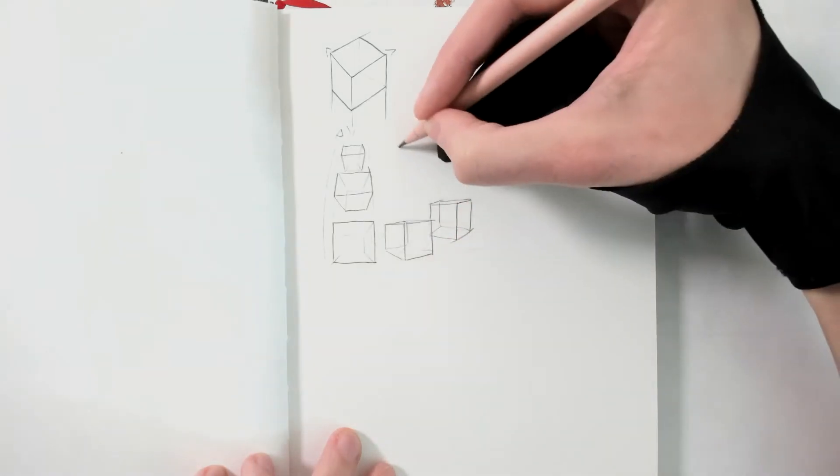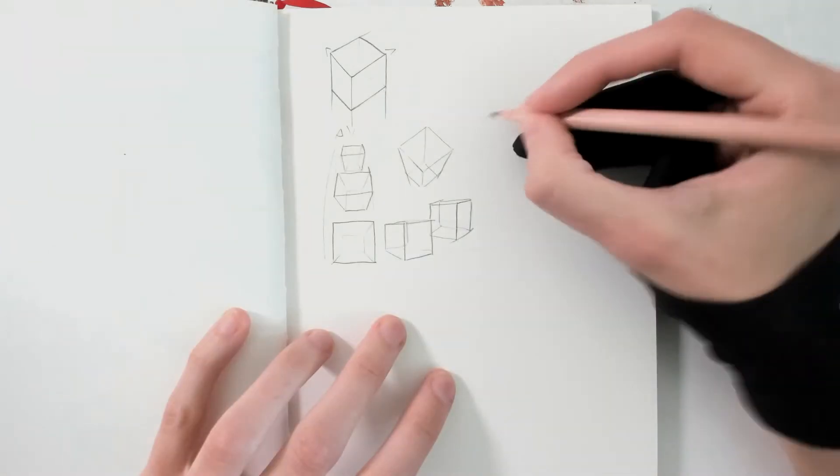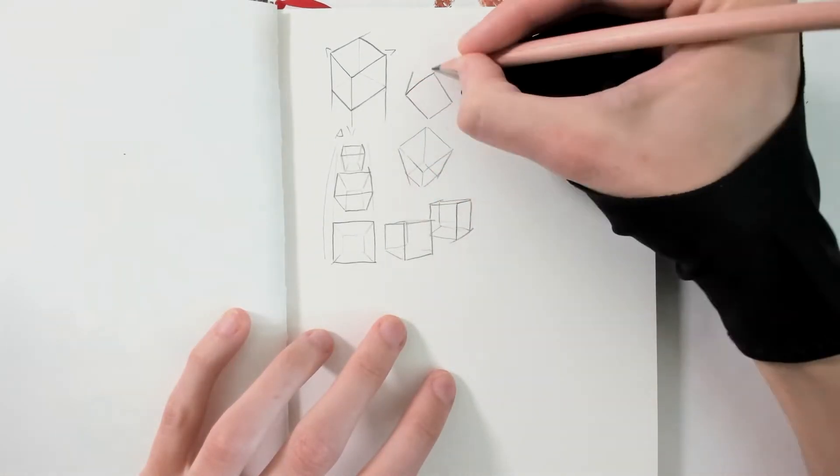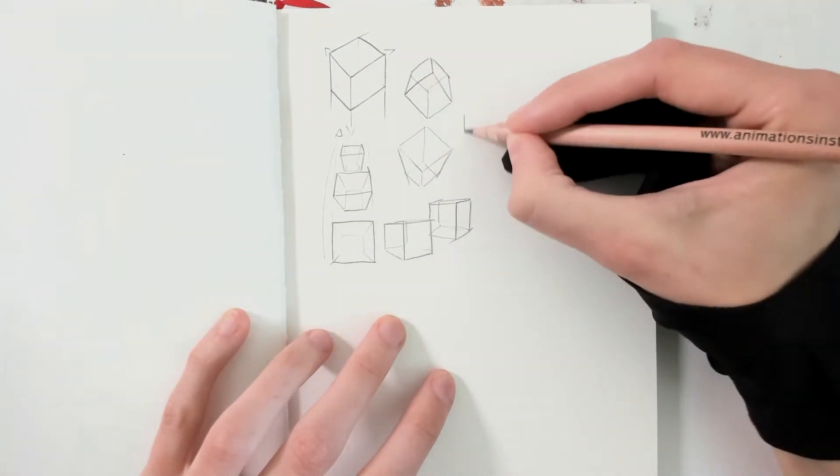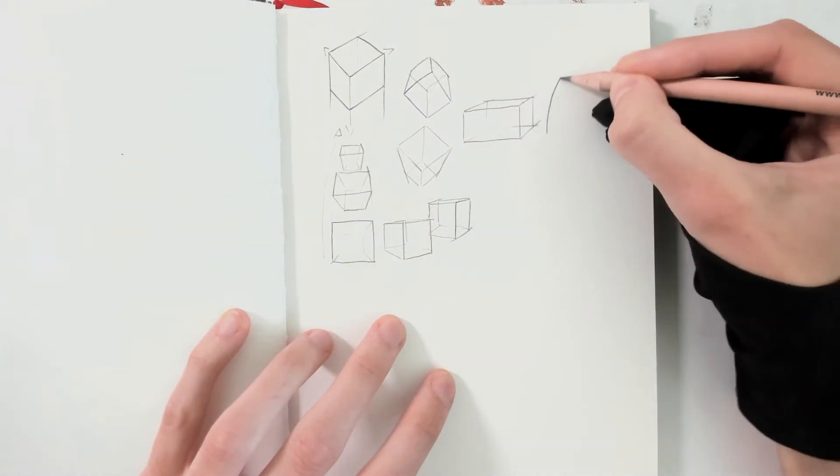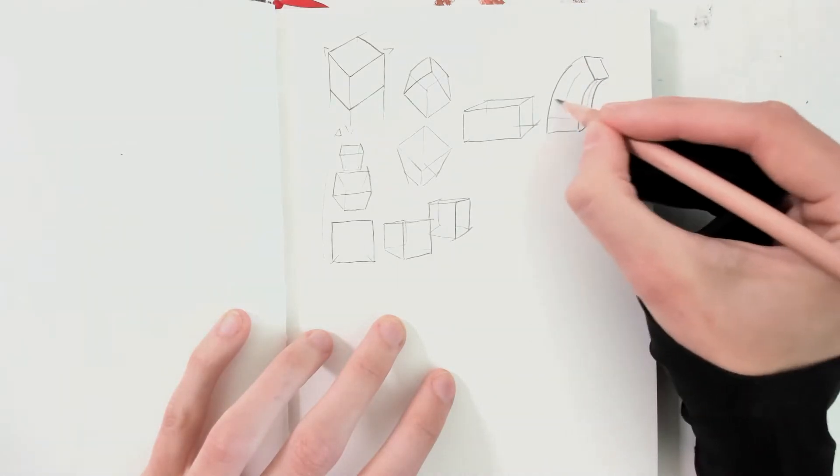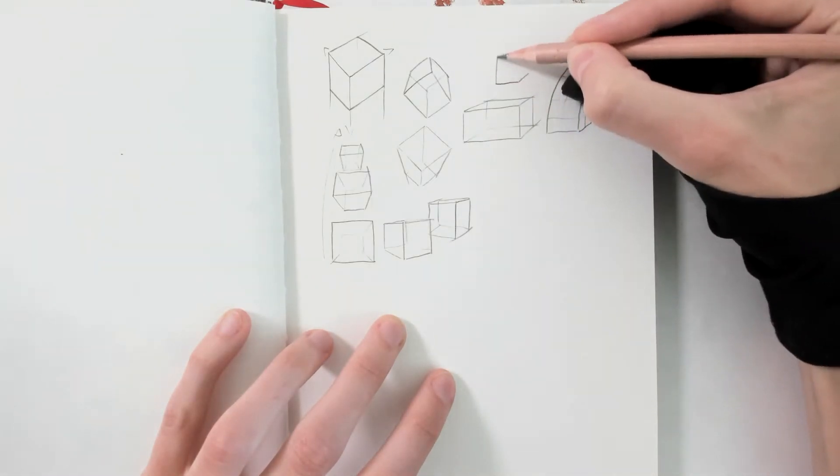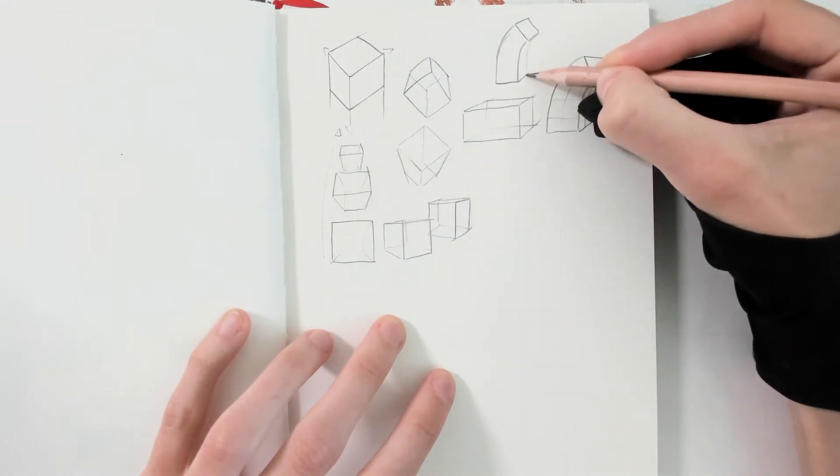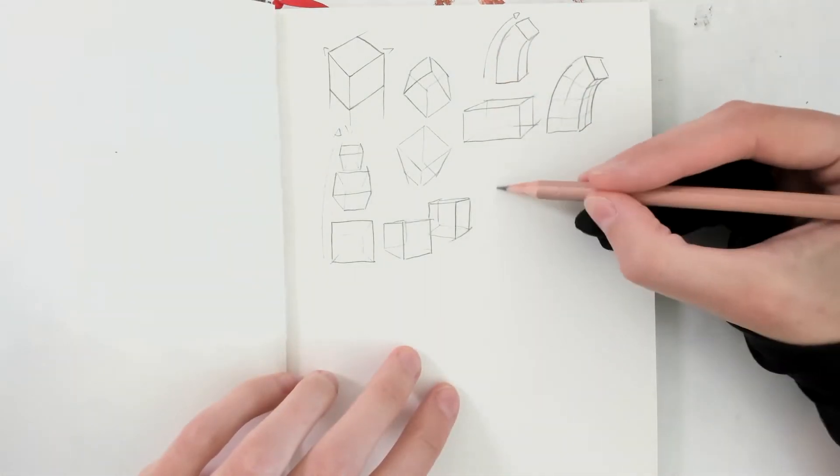So basically the idea of this exercise is to draw simple forms and shapes or volumes and try to turn them around in different angles or perspectives or manipulate them with their form, think about the construction. And I have a few pieces later on where I even try to play around a little bit with shadow.